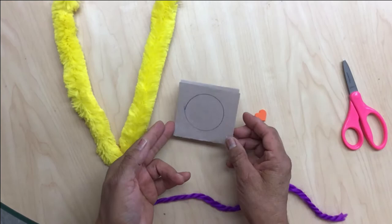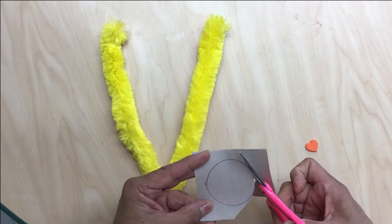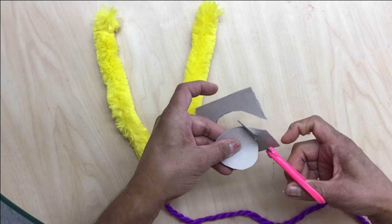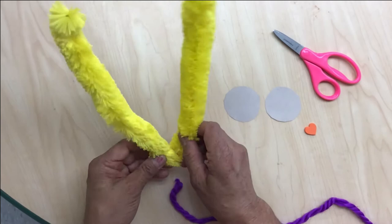First I'm gonna get the folded template with a circle shape and get my scissors and start cutting the circle. And I got two circles, okay? I'll put them down.